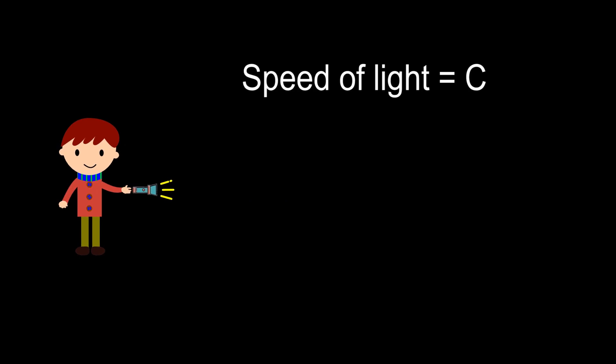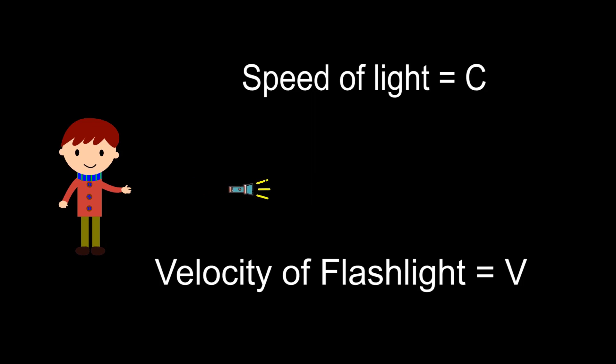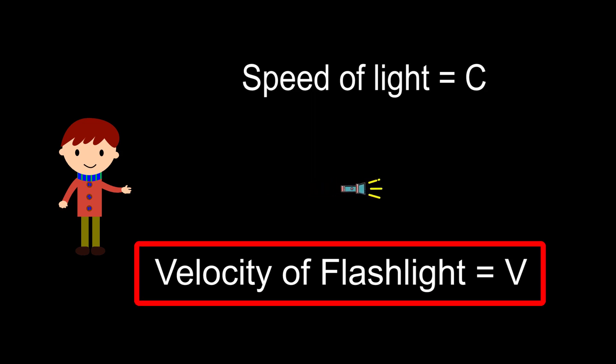After that, you threw the flashlight and waited till it reached a constant velocity v. Then, with full confidence, you said that the torch is moving with the absolute velocity v. And if I measure the velocity of light now, I will get v plus c. You did the experiment and got c, not v plus c.